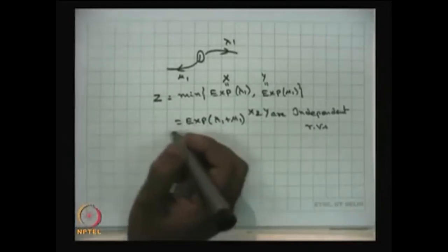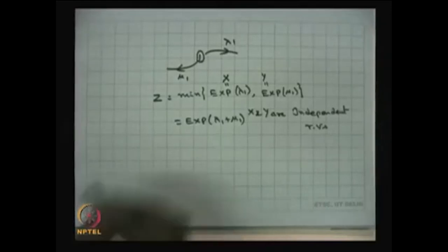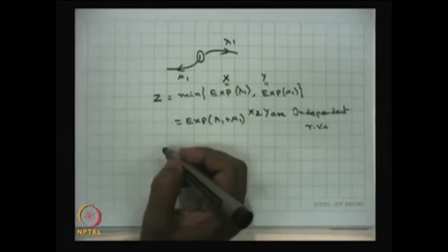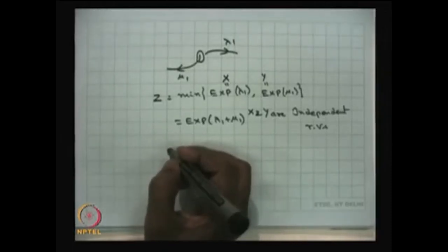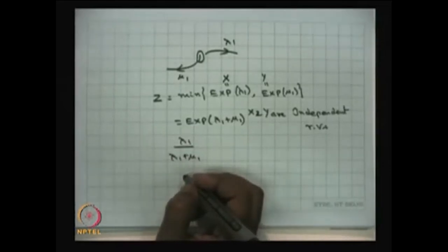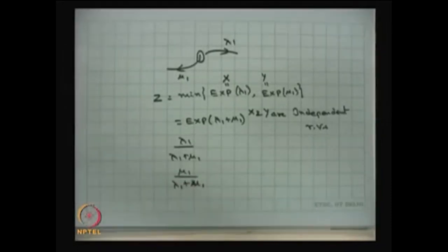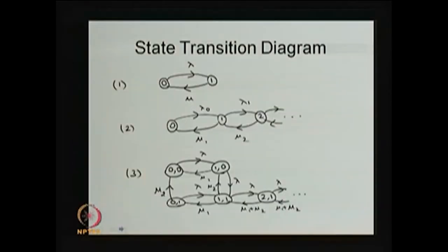Therefore the time spent in state 1 is exponentially distributed with parameter lambda-1 plus mu-1. One can also find the probability that the system moves into state 2 before state 0, which is lambda-1 divided by (lambda-1 plus mu-1); and the probability of moving into state 0 before state 2, which is mu-1 divided by (lambda-1 plus mu-1). Similarly, the time spent in state 2 is exponentially distributed with parameter lambda-2 plus mu-2. This is one type of continuous time Markov chain.